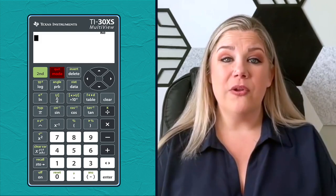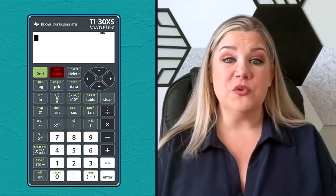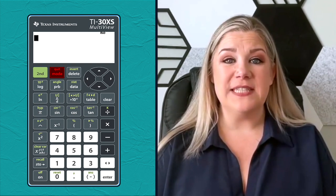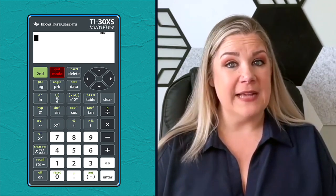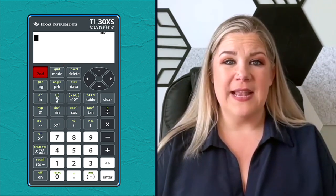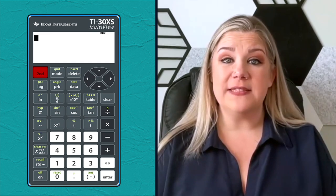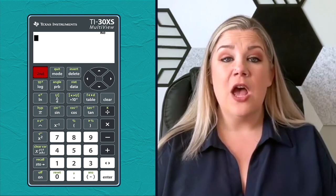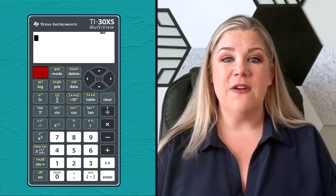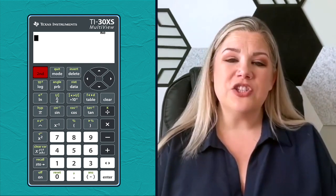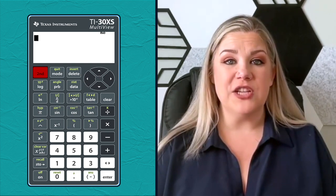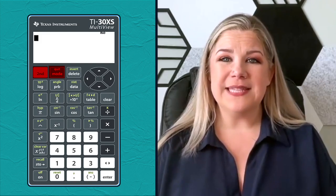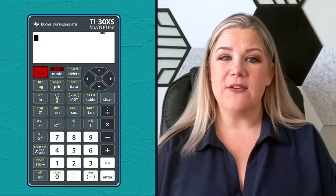Up here we have the mode button, where you'll see options for degrees, radians, and gradients. Just select the mode that matches the type of angle measurement your problem is asking for. The second button essentially doubles the capabilities of this calculator — it allows you to access the secondary functions of certain buttons. You can see the secondary function of a button in a light greenish color above the primary function on some buttons. For example, pressing second then mode selects quit, which exits whatever mode you're in.